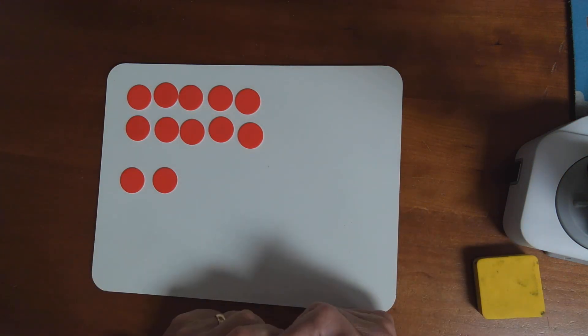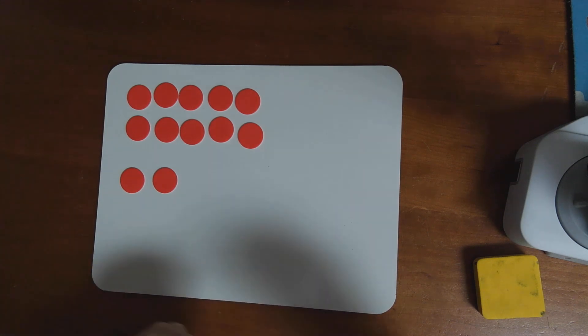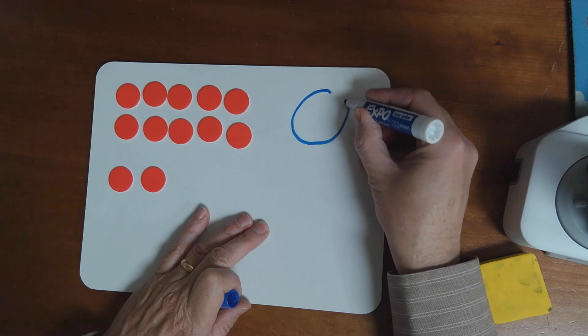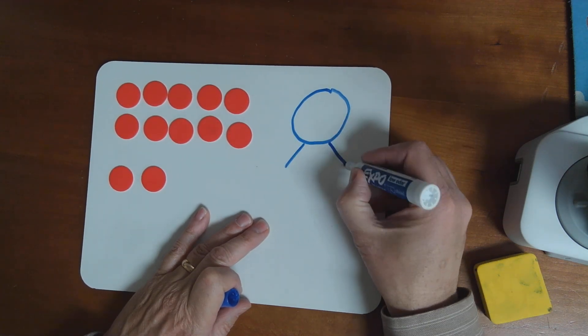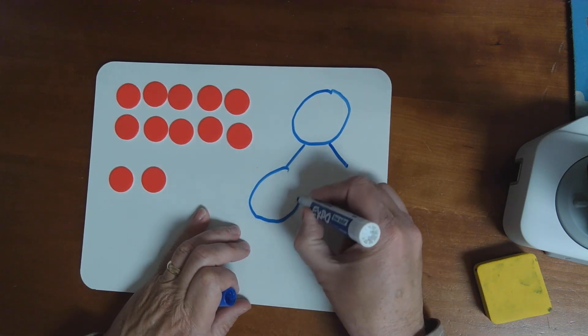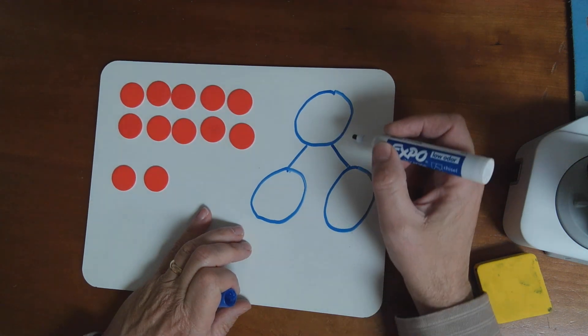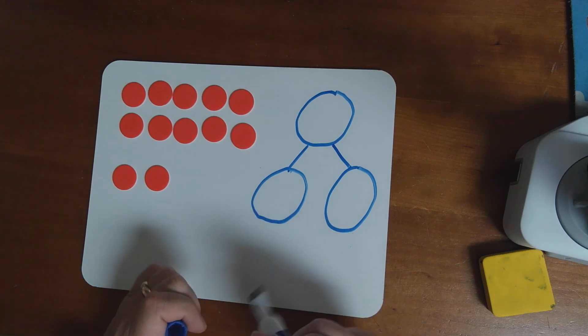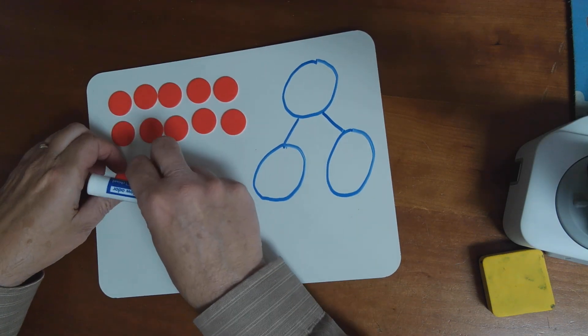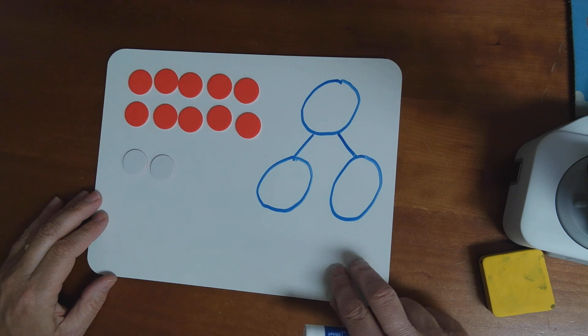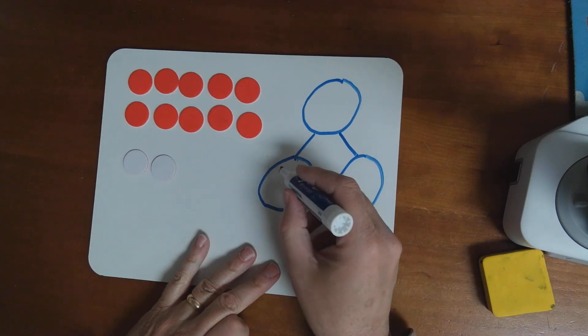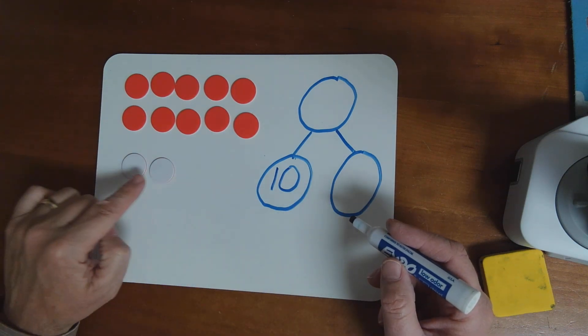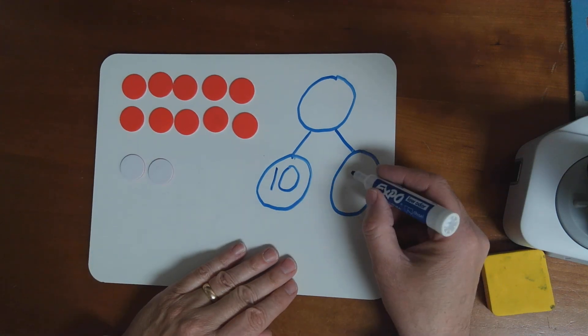Now, how can I make 12? Well, I can definitely use a number bond, right? Okay. So, I'm going to put my whole up here and I'm going to put my parts. That's a squeaky. Now, since we're looking at 12 with a group of 10 and some more like this, then one of my parts needs to be 10, right? And then what's the other part? Hard to see on the white, but it is 2.